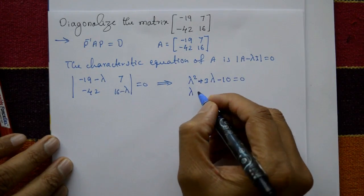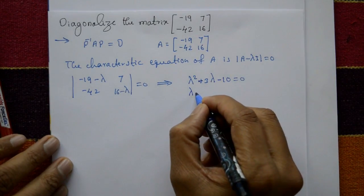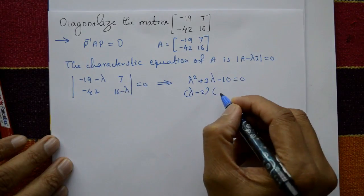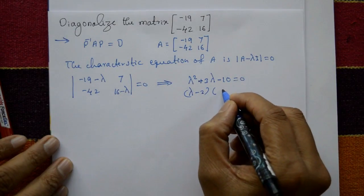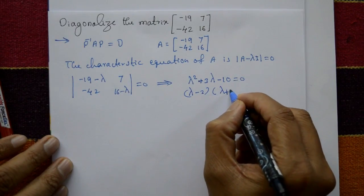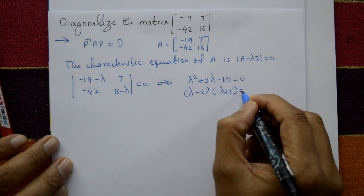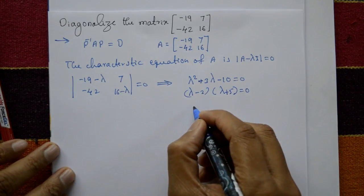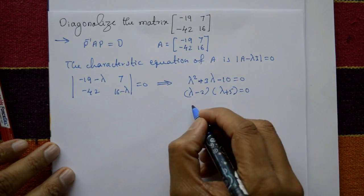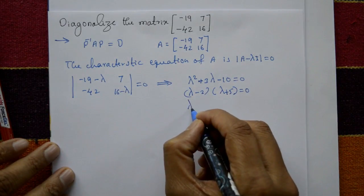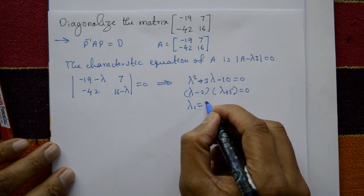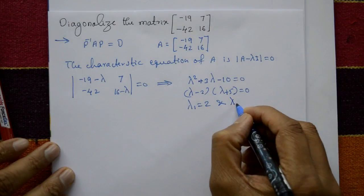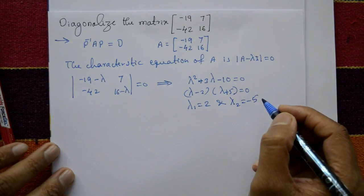By factorization: (lambda minus 2)(lambda plus 5) equal to 0, giving two eigenvalues: lambda 1 is equal to 2 and lambda 2 is equal to minus 5.